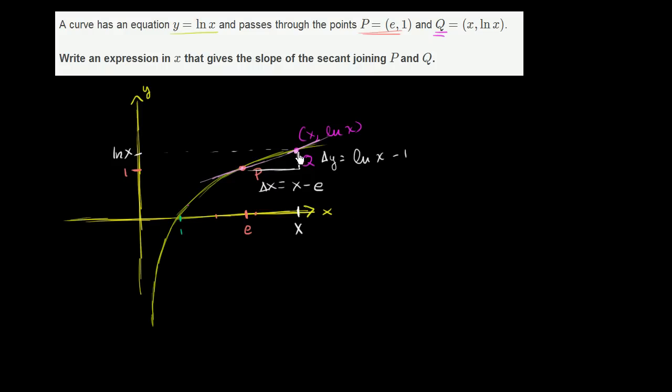So the slope of this line, the line that contains both of these points, the slope, and I could write m for slope, is going to be our change in y over our change in x, which is equal to ln(x) minus 1 over x minus e.